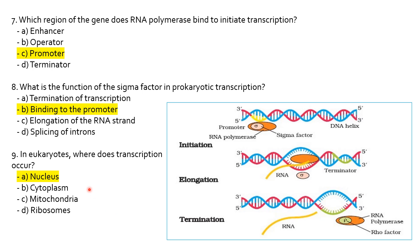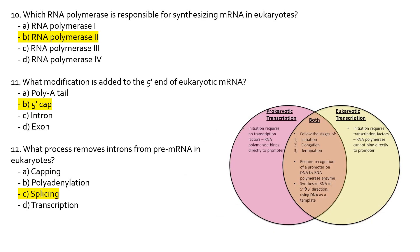In eukaryotes, transcription occurs in the nucleus. Which RNA polymerase is responsible for synthesizing mRNA in eukaryotes? What modification is added to the 5' end of eukaryotic mRNA? To protect the mRNA from degradation, we have the 5' cap. Which process removes introns from pre-mRNA in eukaryotes? Introns are removed by splicing — capping is for protection from degradation, while splicing removes the non-coding regions (introns).